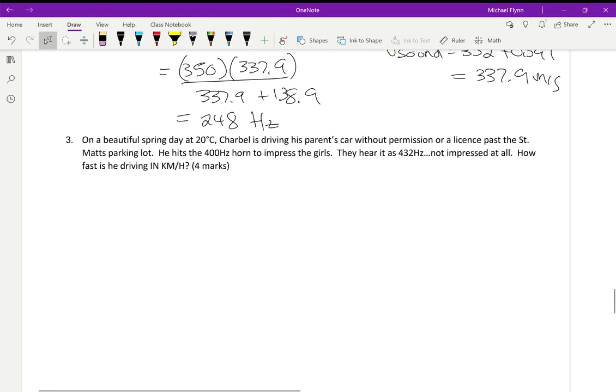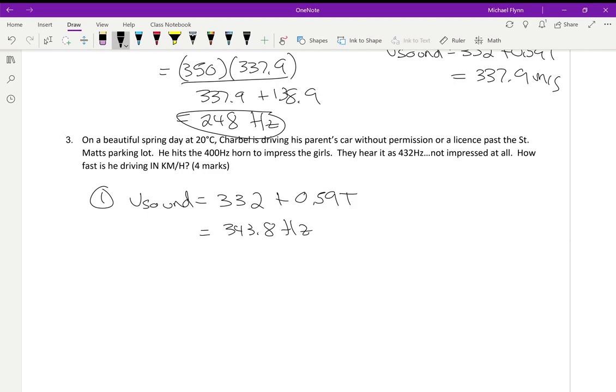Last question: beautiful spring day, 20 degrees. He's driving with 400 Hz horn, but they hear 432. How fast is he driving? Step one: find the speed of sound. Like a broken record - 332 plus 0.59, sorry I had to circle the answer in the last one. Times the temperature: 332 plus 0.59 times 20, I get 343.8 meters per second. Okay, sorry, I got distracted. I heard a sound here, plus it's snowing out. What is this, it's April?